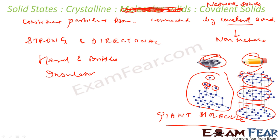Graphite has a typical layered structure where carbon atoms are arranged in different layers. Each atom is bonded to three neighboring atoms, and the fourth electron is present between the layers and is free to move — that is why graphite conducts electricity and is also soft. The layers slide over each other, making graphite a very good solid lubricant. At high temperatures, normal lubricants used in vehicles may burn, so graphite is used as a lubricant in high-temperature machinery where normal lubricants would fail.